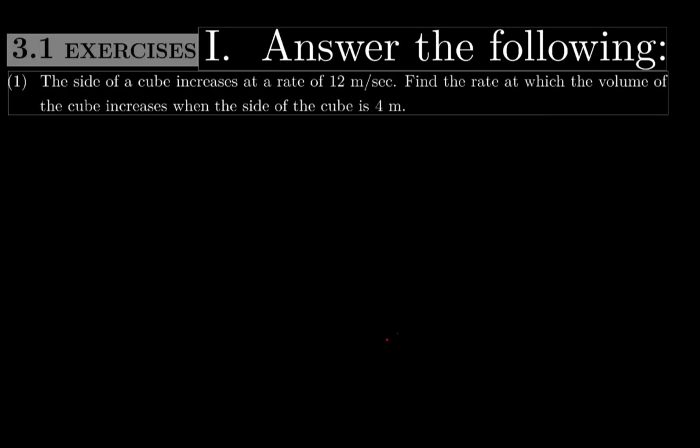In this video we will deal with some applications of derivatives. Question number 1: the side of the cube increases at a rate of 12 meters per second. Find the rate at which the volume of the cube increases when the side of the cube is 4 meters.